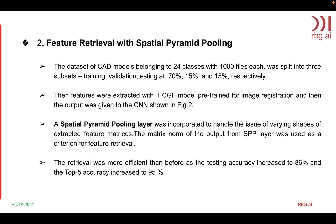Based on these results, we tried a modified approach. The features were extracted with a FCGF model pre-trained for image registration and the output was given to a convolutional neural network. A spatial pyramid pooling layer was incorporated to handle the issue of varying shapes of extracted feature matrices. The matrix norm of the output from the SPP layer was used for feature retrieval. The retrieval turned out to be more efficient than before, and the testing accuracy increased to 86% and the top-5 accuracy increased to 95%.